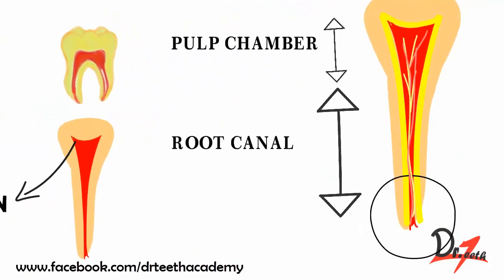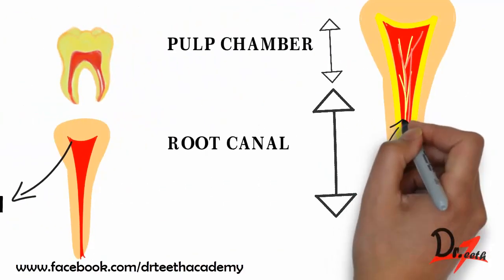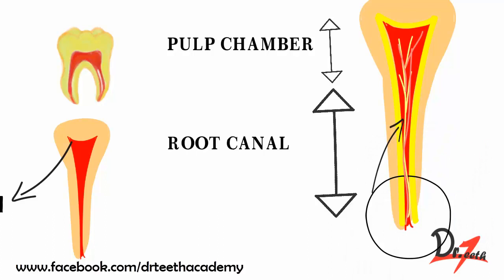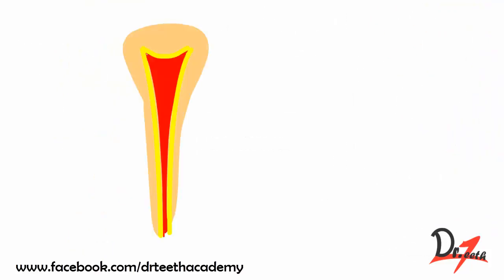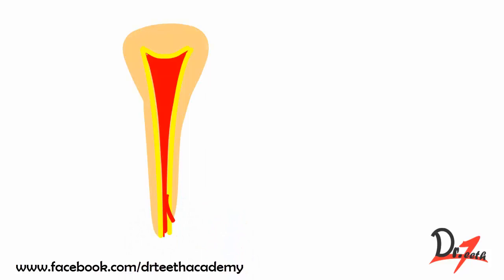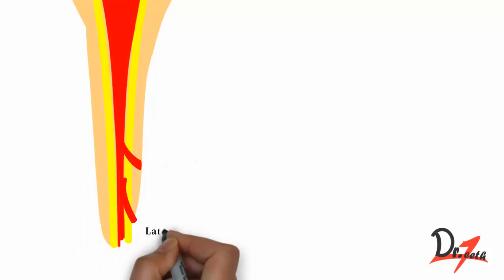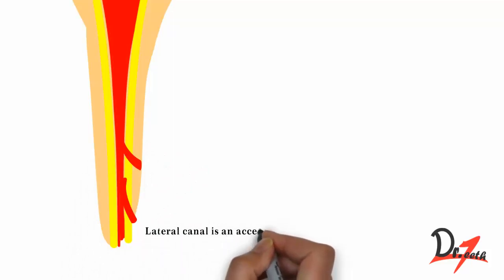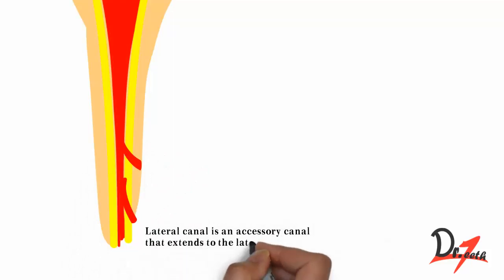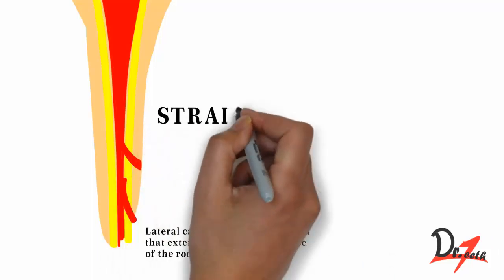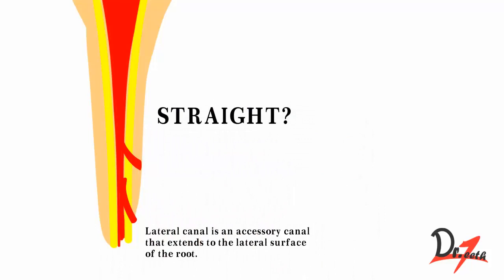The root canal is the portion that extends from the canal orifice to the apical foramen. We divide it into three parts for convenience: coronal, middle, and apical third. Accessory canals are extra canals found apart from the main canal, also called lateral canals. To be specific, a lateral canal is an accessory canal that extends to the lateral surface of the root.